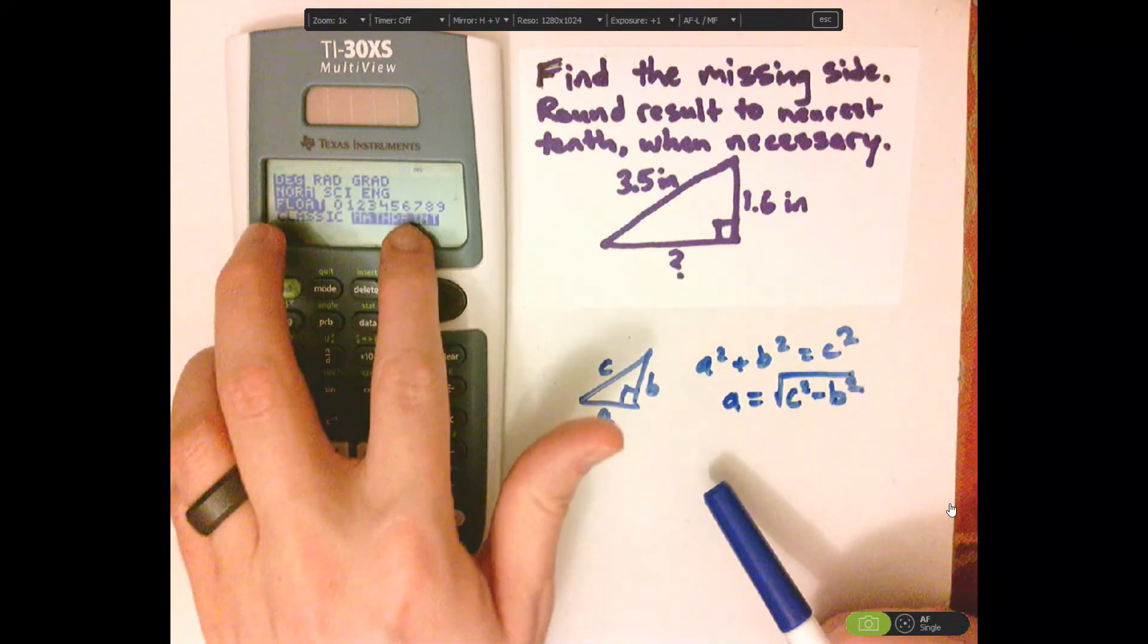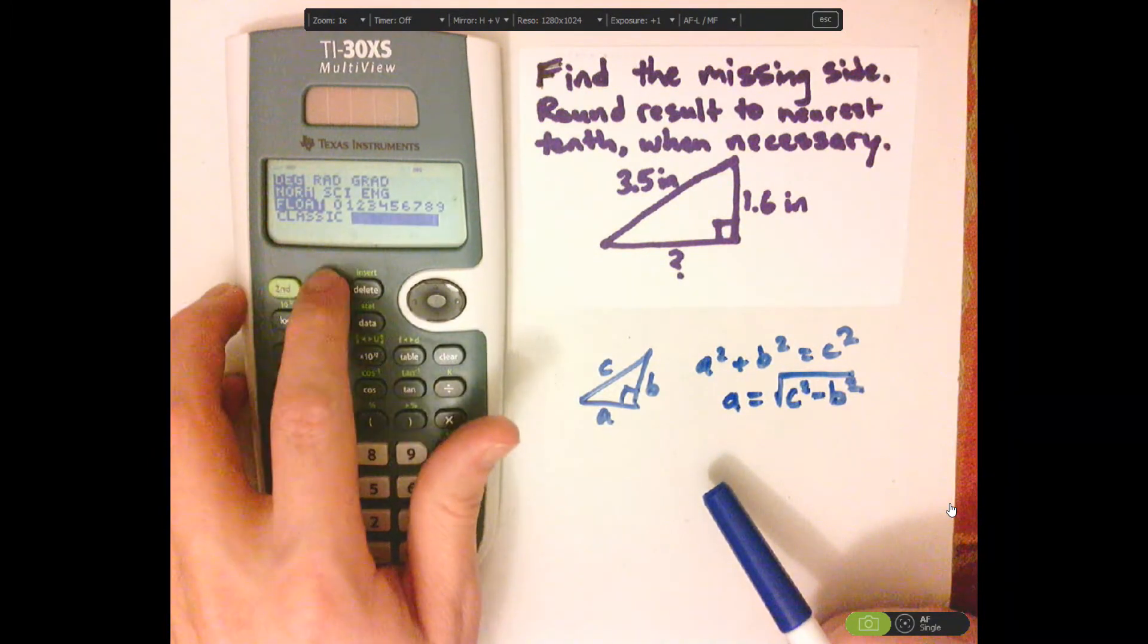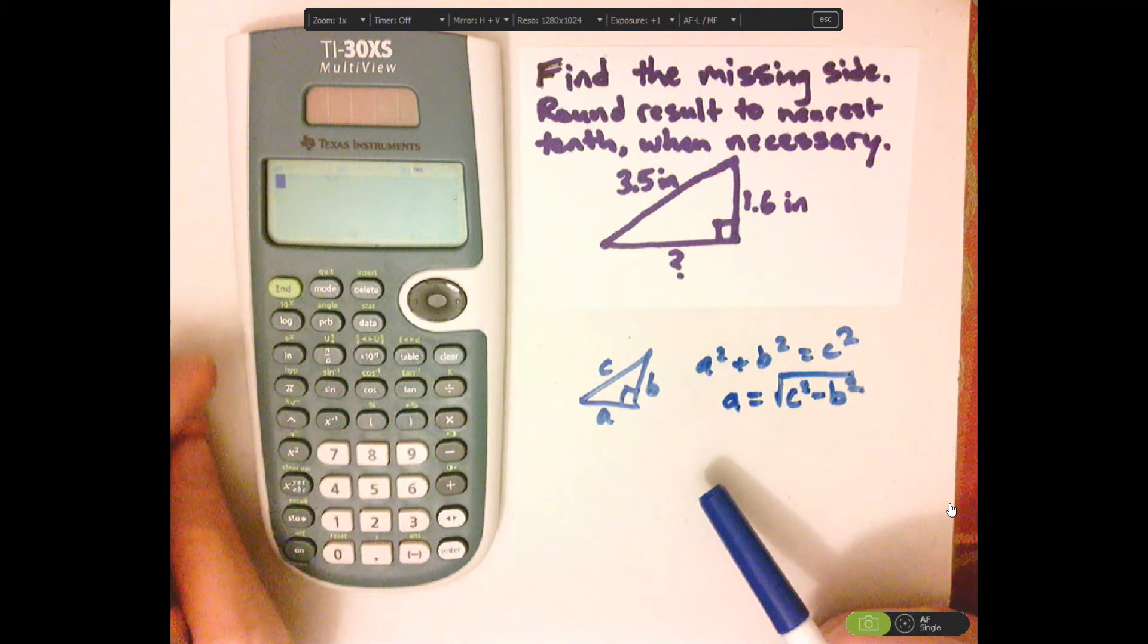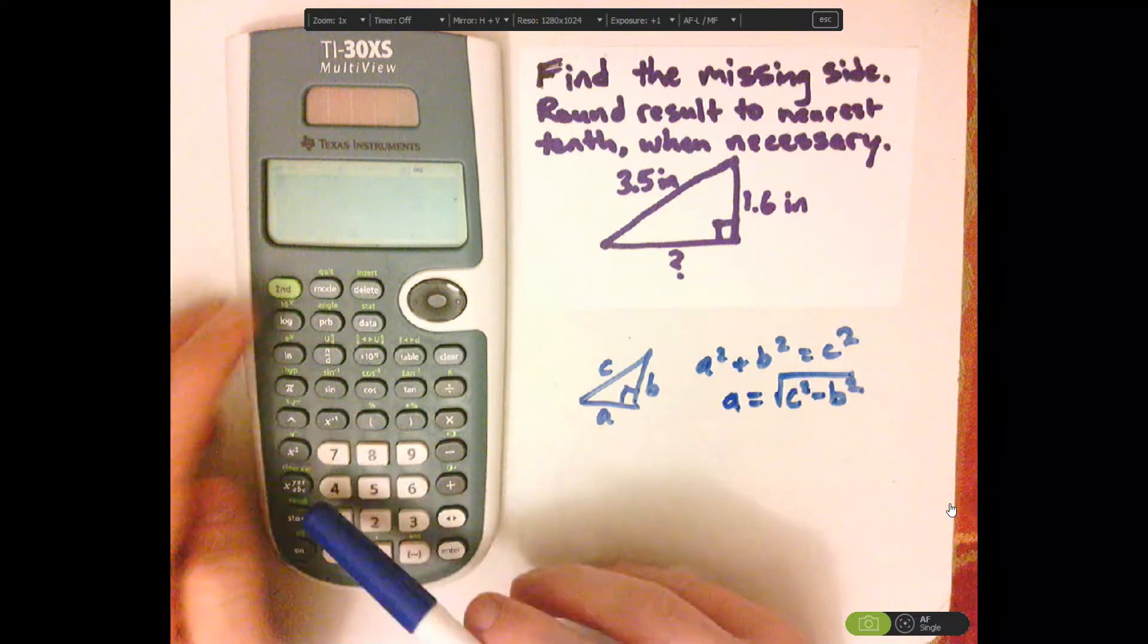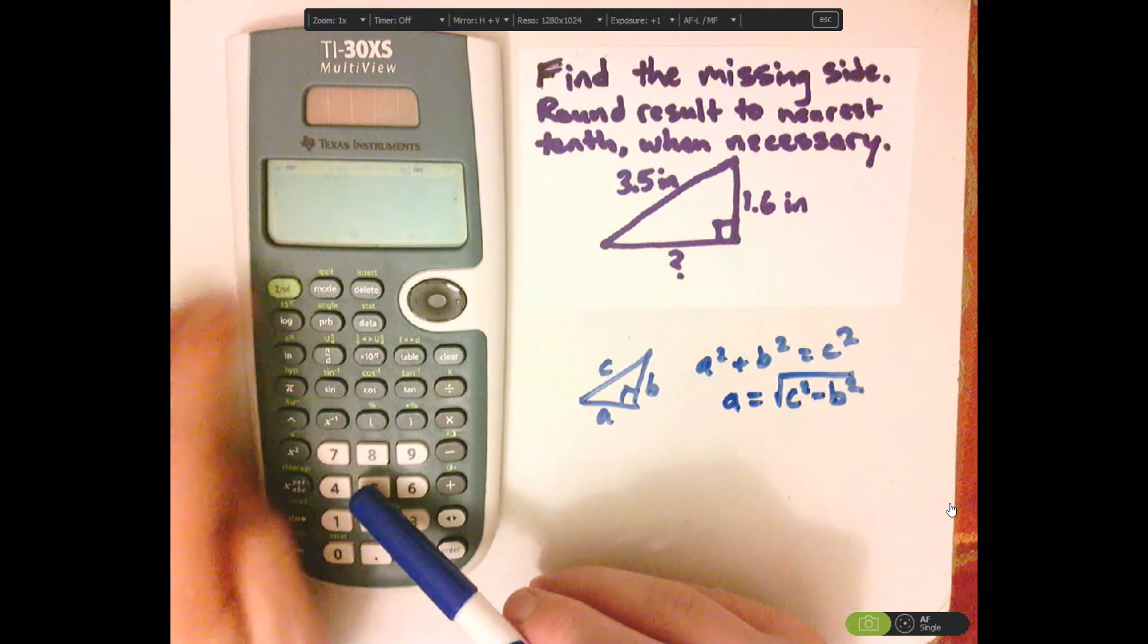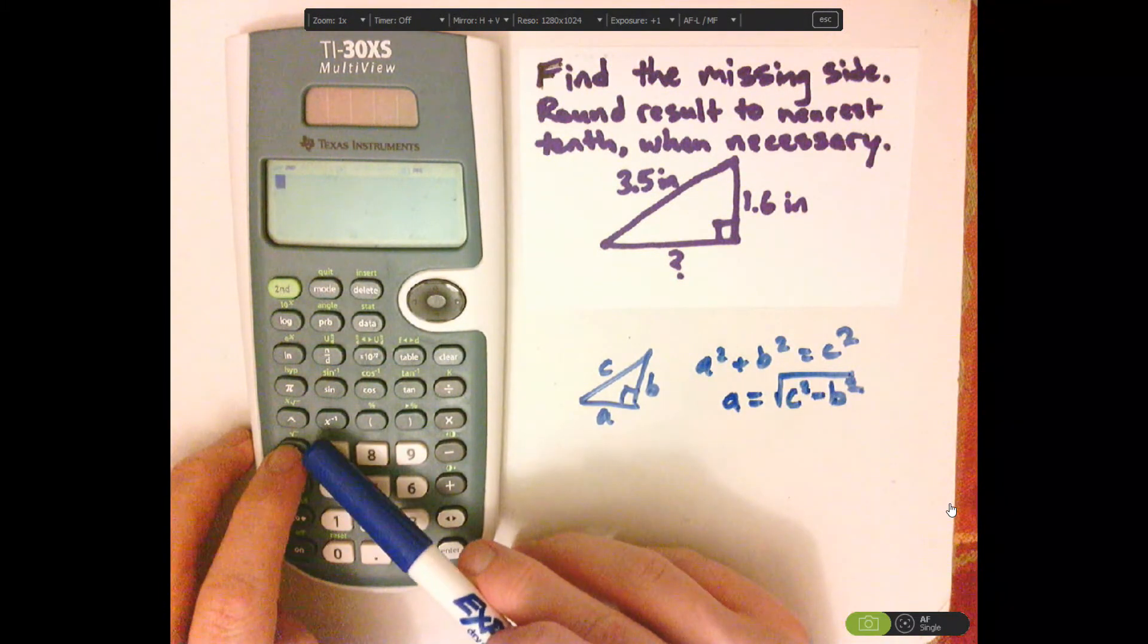Second, quit, and then square root. Square root is right above the X squared button, so second, and then push X squared to get the square root.